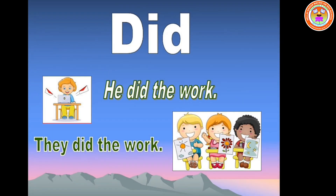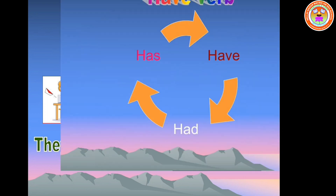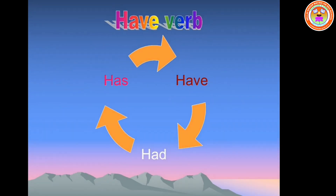Did is used with singular and plural subjects to indicate past. Example: he did the work. They did the same. Have verb: has, have, had are the forms of have verb.